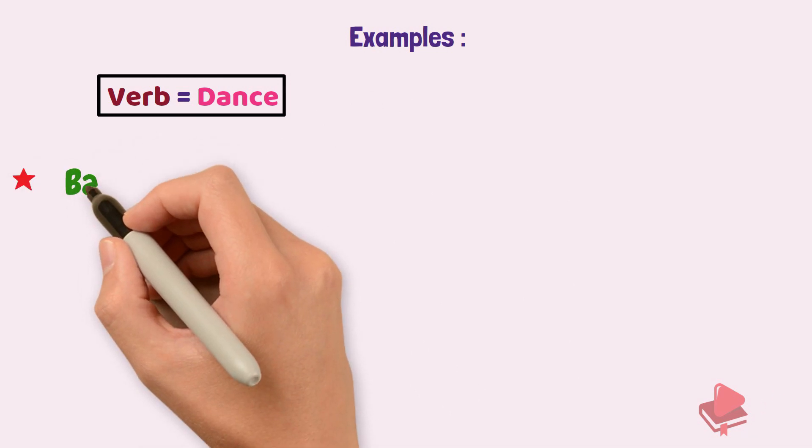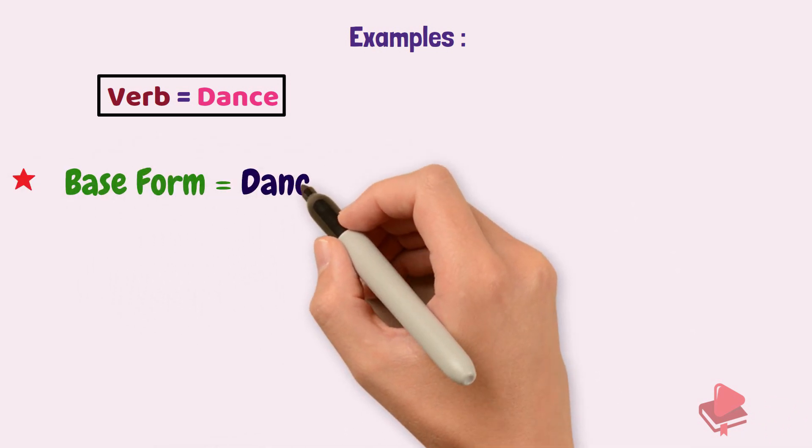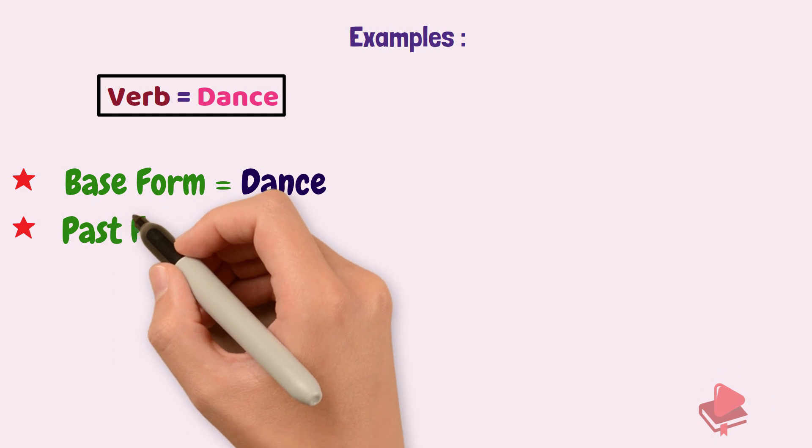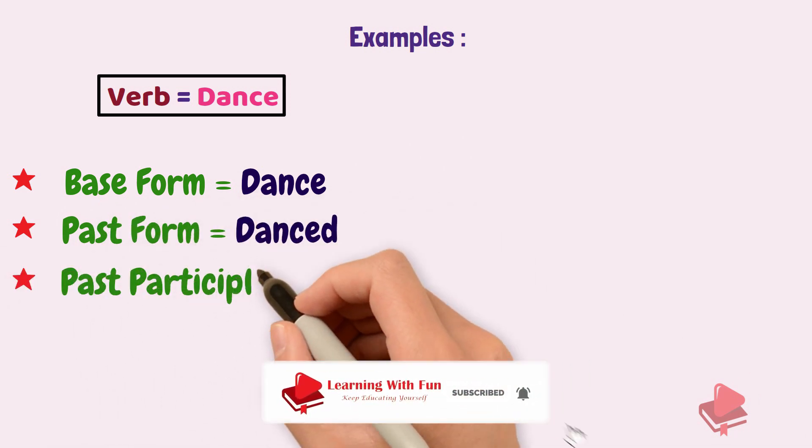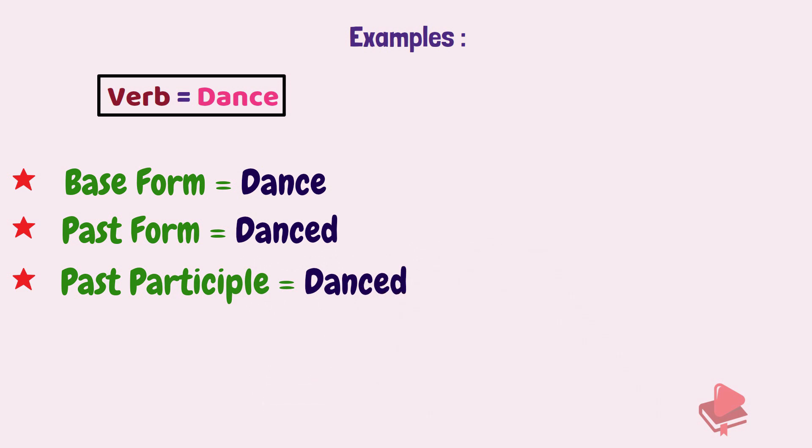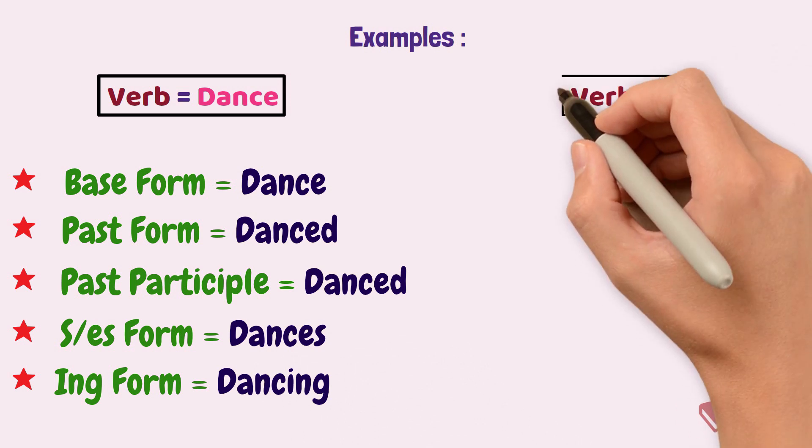Let us understand this with some of these examples. Let's take the verb as dance. The base form of dance is dance, past form is danced, past participle is danced, the S or ES form of dance is dances and an ING form of dance is dancing. Let's take one more example.